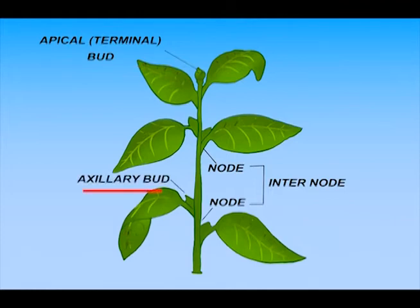The axil of the leaf is the space around joint point of leaf and stem. Buds grown on stem at this joint are called axillary buds. Axillary buds may grow into a branch or flower.